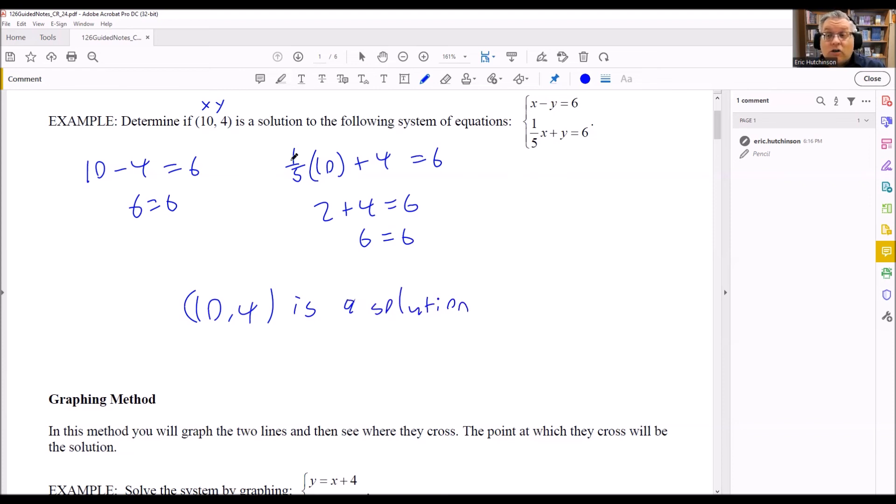Now if it didn't work and you got a false statement, like 5 equals 6 or something that's false, then you would say it's not a solution. But this one definitely is, because we got both sides to be equal when we plugged those numbers in.